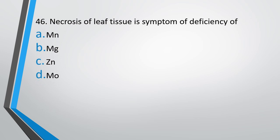Question No. 46. Necrosis of leaf tissue is the symptom of deficiency of which element? Option A: Manganese. Option B: Magnesium. Option C: Zinc. Option D: Molybdenum. The correct answer is Option B: Magnesium deficiency causes necrosis of the leaf tissue.